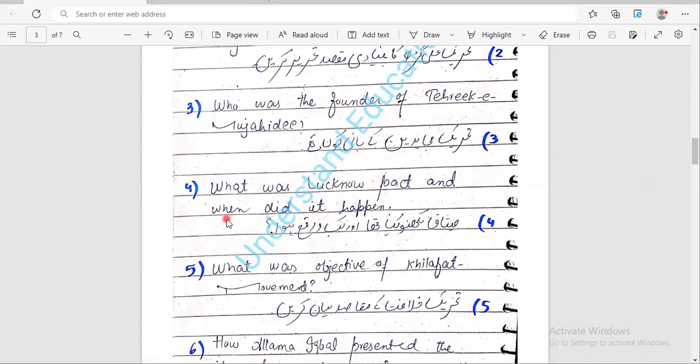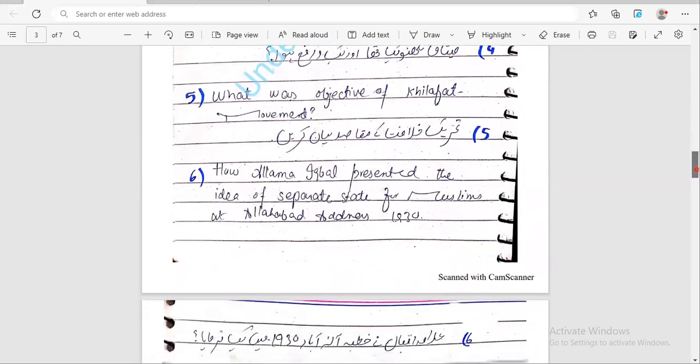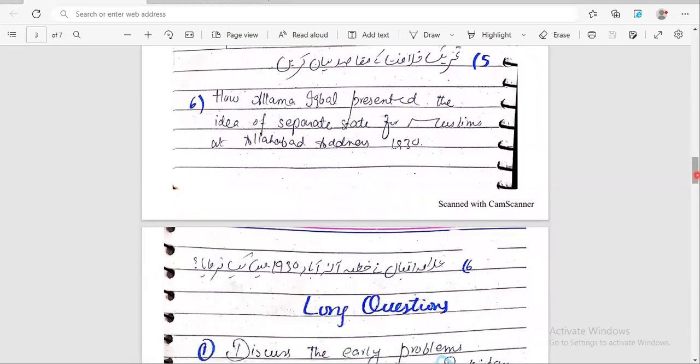Who was the founder of Tehreek-e-Aligarh? Question number four: What was the first Lucknow Pact and when did it happen? Very important question - where did it happen? Mithaq-e-Lucknow is very important. Next: What was the objective of Khilafat movement? Also very important. The movement that was started, what were its objectives? The objectives are important - there are five or six objectives.